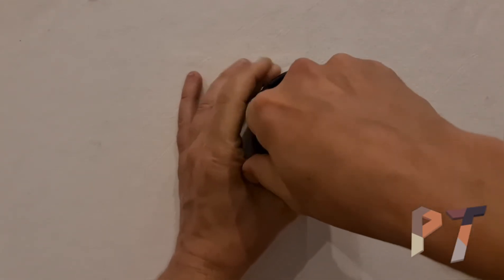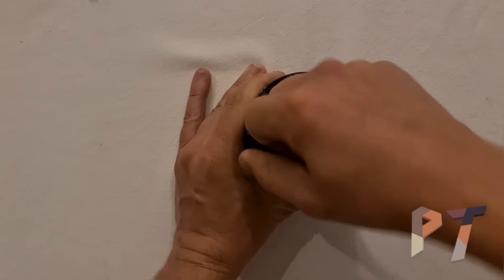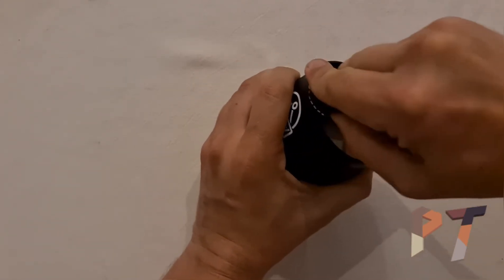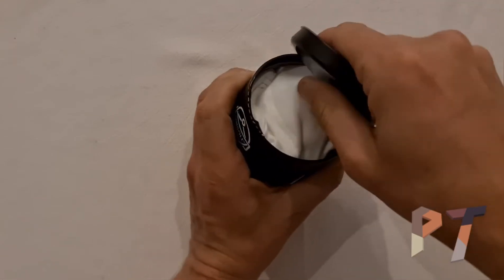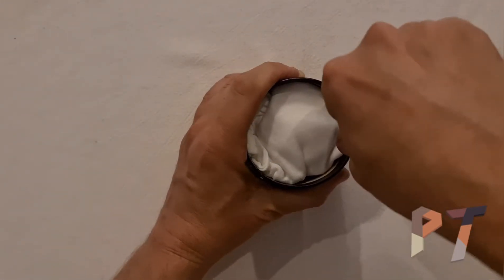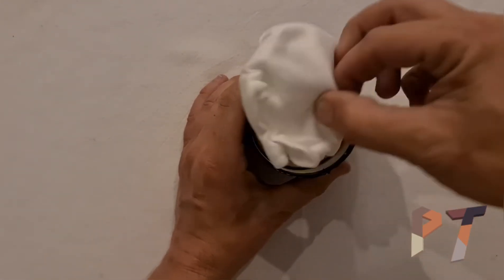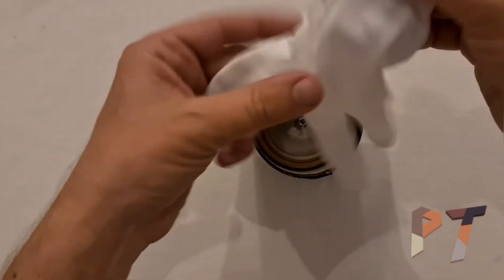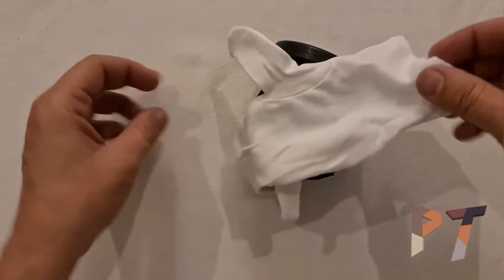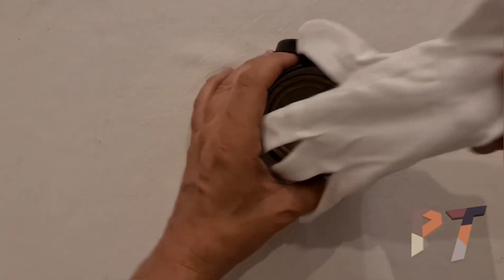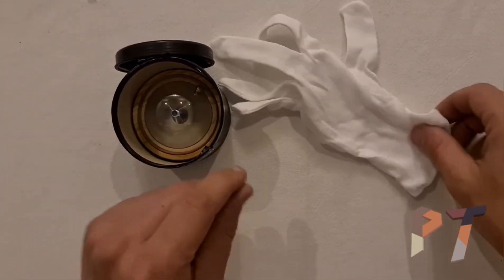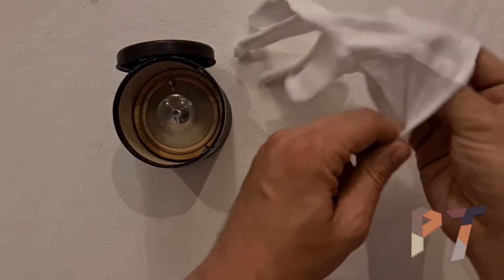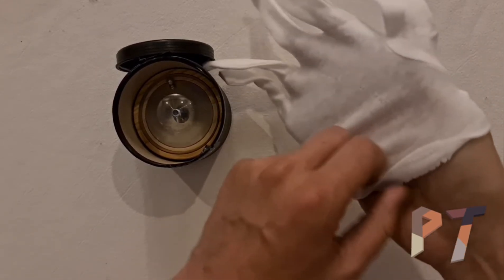I'm presuming that I can just pull this and it will rip. There we go. So that's our lid off and inside we have a white glove. Now I was actually expecting a glove of some sort because I was asked to provide my hand size.